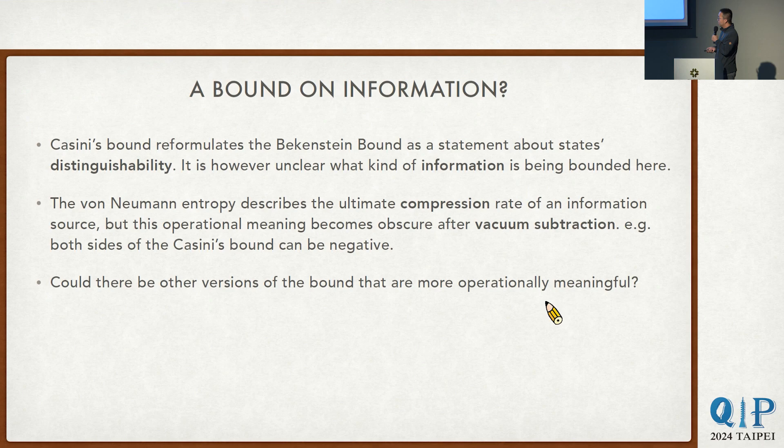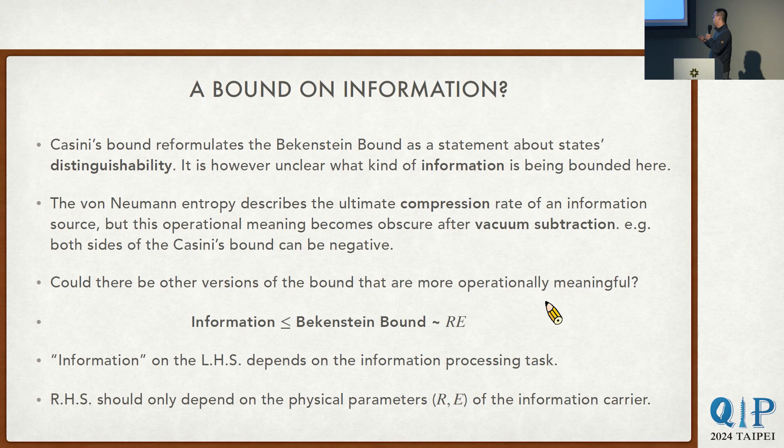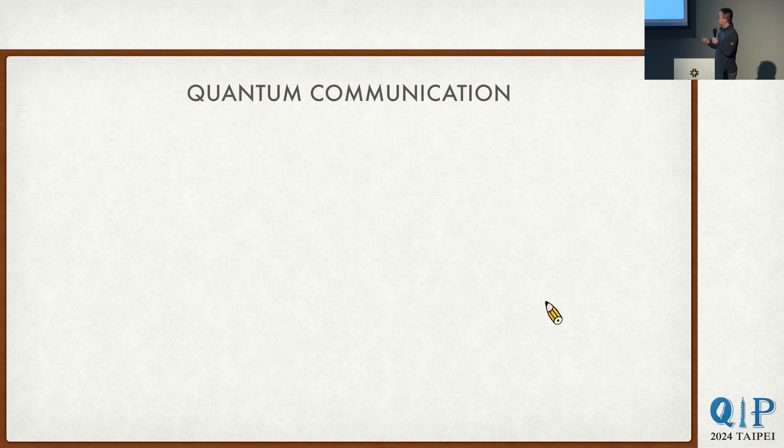The question we want to ask is: could there be other versions of the bound that are more operationally meaningful? We want something of this form where you have the Bekenstein bound as usual on the right-hand side, but on the left-hand side, you have something that is operationally meaningful. So we better start with a concrete operational task.